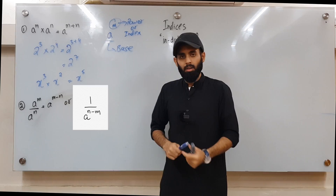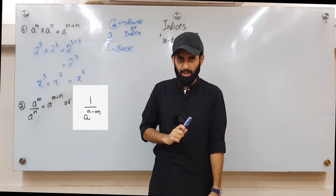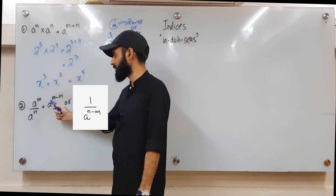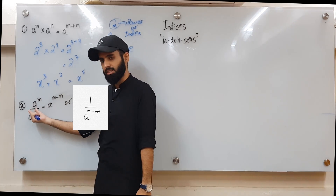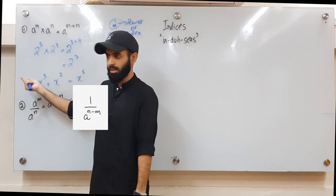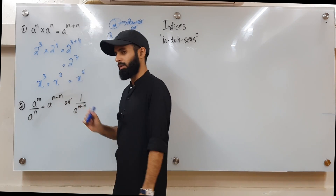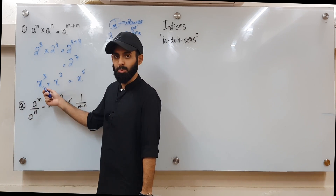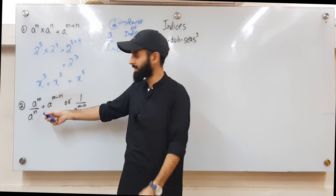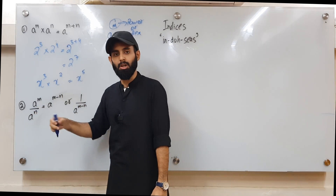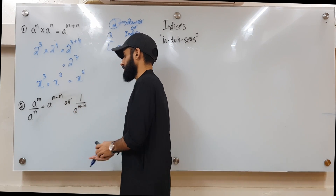Rule number two: if same bases are divided, the powers get subtracted. You have two ways to do this. If you wish to keep the numerator as it is, you bring the power in the denominator and subtract it from the power in the numerator. Alternatively, if you wish to remove the numerator and take it down to the denominator, you keep the base in the numerator and subtract the power of the numerator from the power of the denominator.